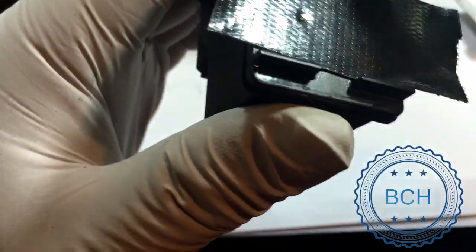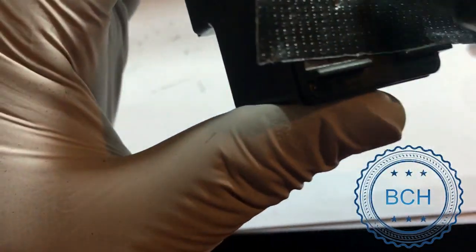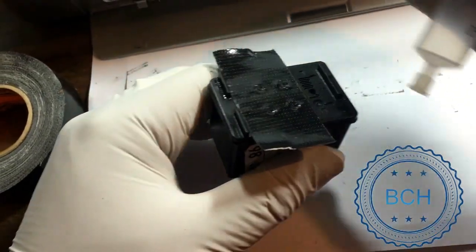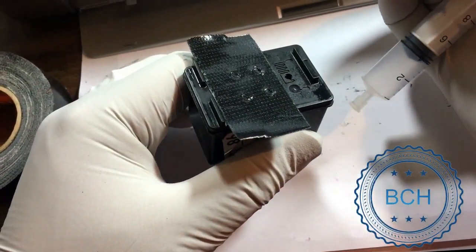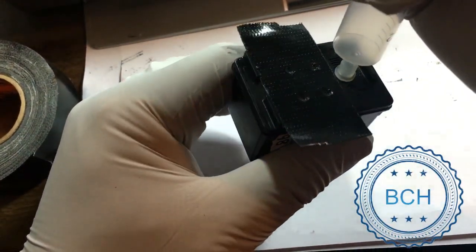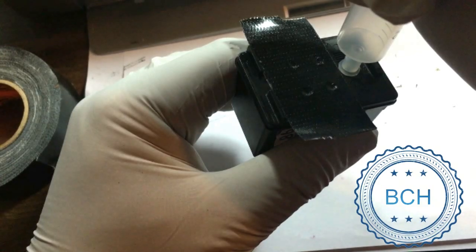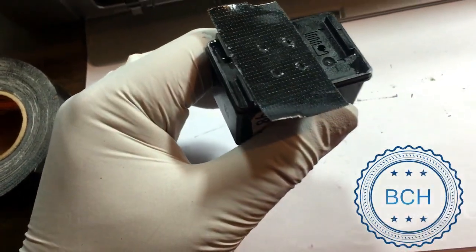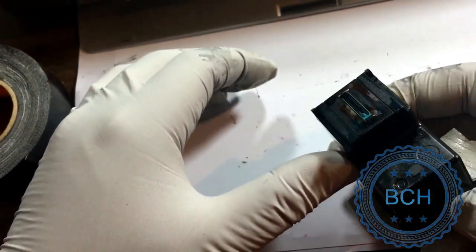We use a priming syringe to blow air into the hole. The priming syringe is also available at BCH website. You can modify a regular syringe to do that too. You can see sludges blown out of the bottom.